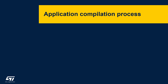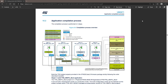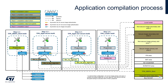Now that the STM32L5 configuration is ready, we can focus on the next step: the compilation of the application. The following section is based on User Manual 2671, Section 10.2. The compilation process is performed in four steps. Because of the dependencies between these projects, it is important to build the TFM-related projects strictly following the order described here.